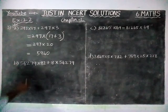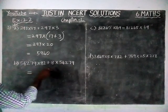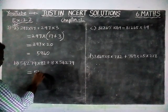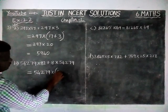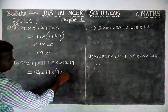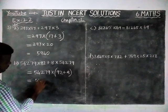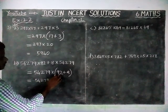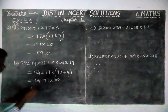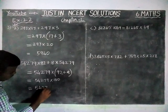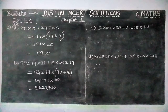Now, option B. Here also, a number is common. 54,279 is common in both sides. So, 54,279 into (92 plus 8) equals 54,279 into 100. That gives us 54,27,900 as the answer for option B, again using the distributive property of multiplication over addition.